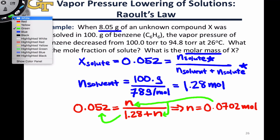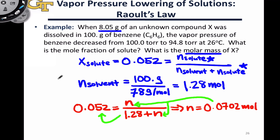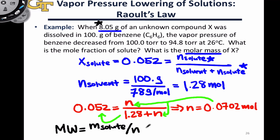From here, we're very nearly done. We have the number of moles of solute in the solution and we have the mass of solute. So the molar mass, or the molecular weight, is simply the ratio of these two — the mass of the solute divided by the moles of the solute. Dividing the given 8.05 grams by the 0.0702 moles of solute gives us a molar mass of 115 grams per mole.